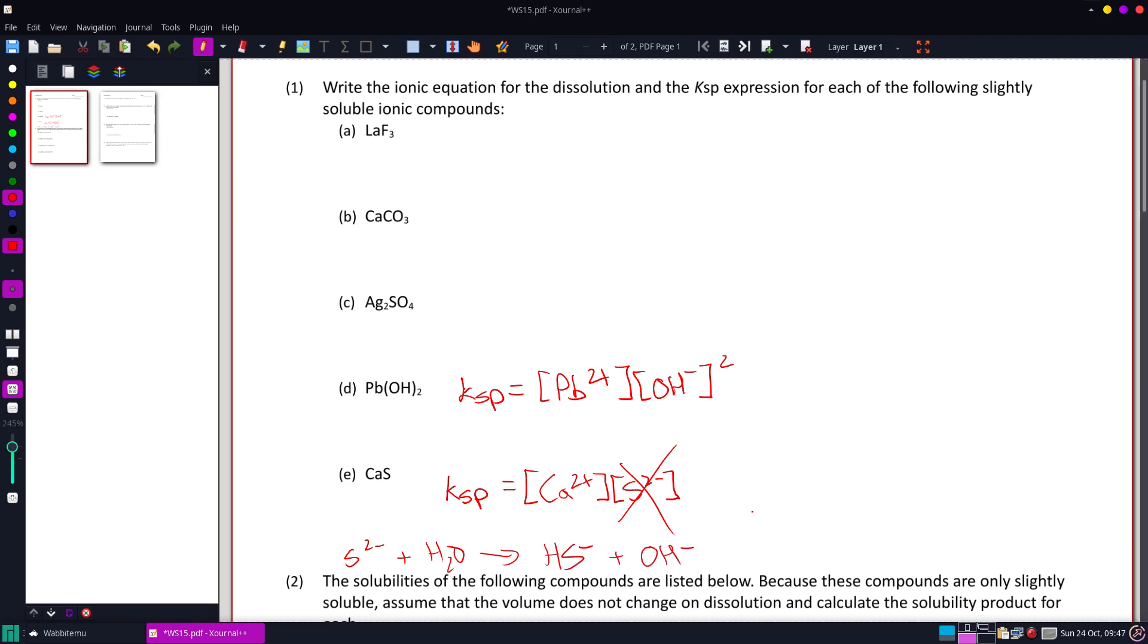So what we need to do whenever we see S in a KSP is we need to switch that, each one of those S's, and we're going to switch that into an HS and an OH.